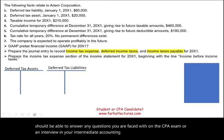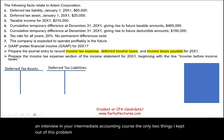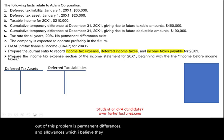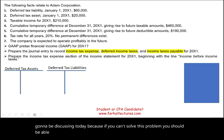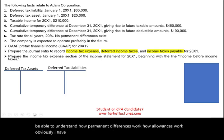The only two things I kept out of this problem are permanent differences and allowances, which I believe are minor relative to the topics we're going to be discussing today. If you can solve this problem, you should be able to understand how permanent differences and allowances work. I have lessons and examples for those two aspects in a separate session.